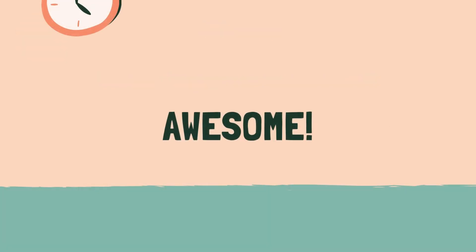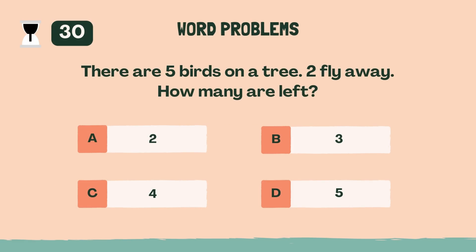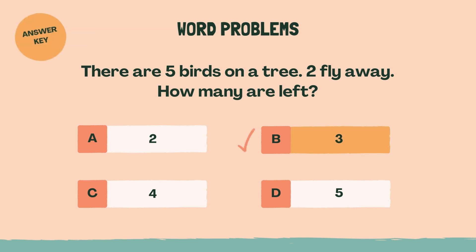Awesome. Last category coming up. Category 6: Word Problems. There are 5 birds on a tree. 2 fly away. How many are left? The answer is B, 3.